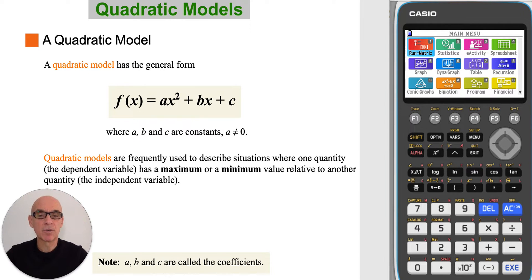A quadratic model has the general form f of x is equal to ax squared plus bx plus c, where a, b, c are constants, called the coefficients.